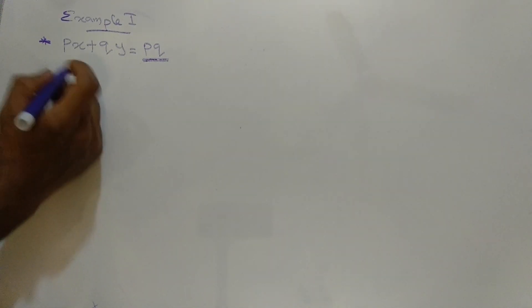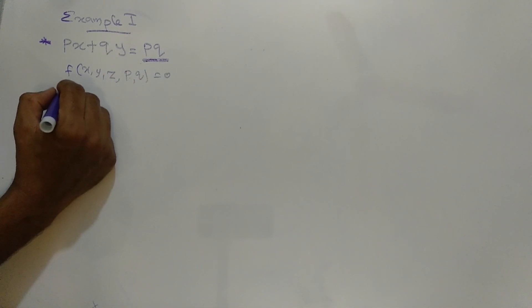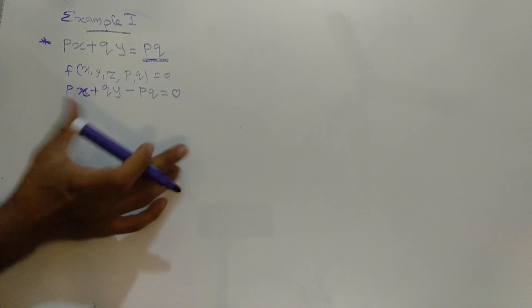We are going to use Charpit's method to solve this first order nonlinear partial differential equation. Before going to the equations, we write the function as f(x, y, z, p, q) = 0, that is px plus qy minus pq equal to 0.